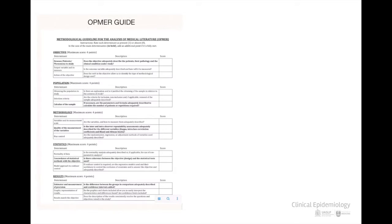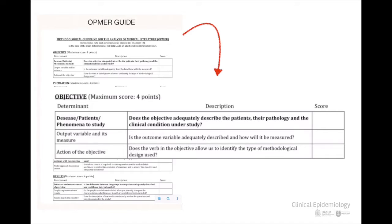At this time, we can evaluate the first point of the OPMR guide. Does the objective adequately describe the patients, their pathology, and the clinical condition of their study? State your score. Is the outcome variable adequately described and how will it be measured? State your score. Does the verb in the objective allow us to identify the type of methodological design used? State your score.